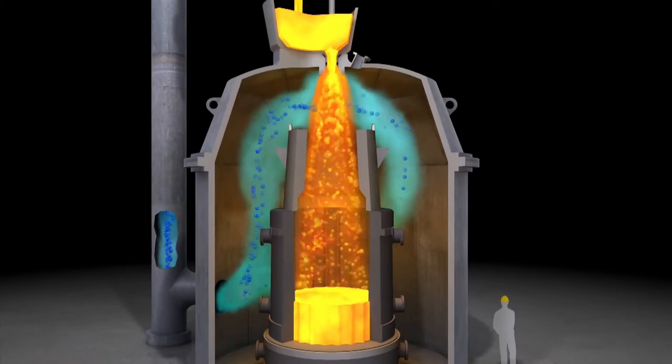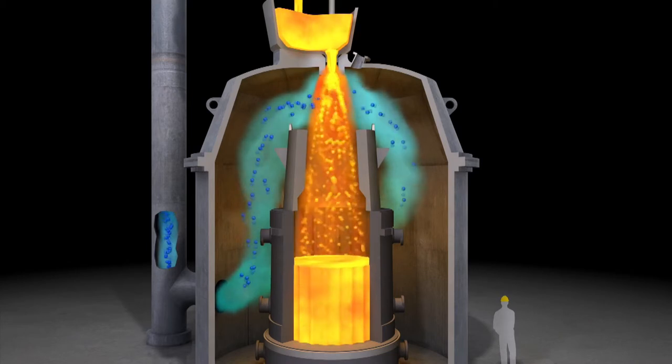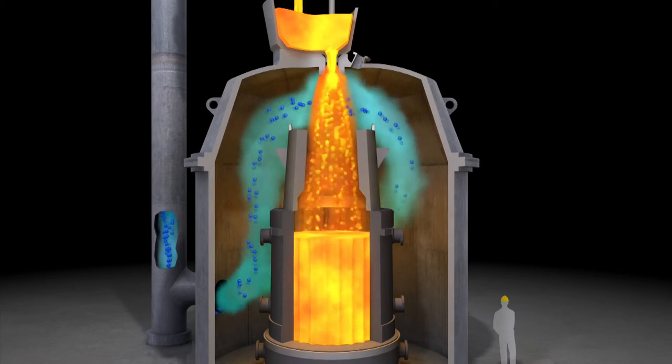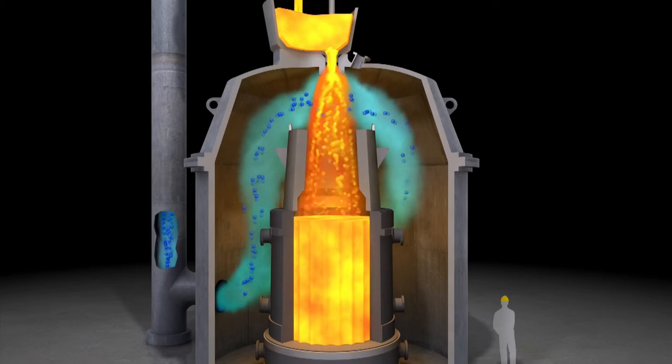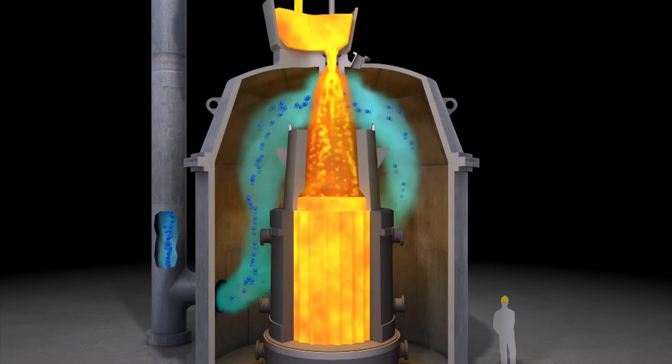As the molten steel enters the vacuum tank, the flowing liquid metal is pulled apart with tremendous force by the low vacuum pressure. This releases any trapped hydrogen from the steel, which is quickly removed and drawn out via the exhaust port.